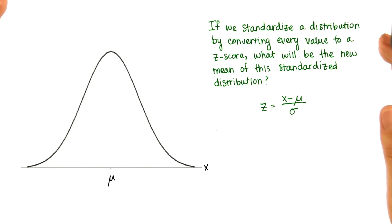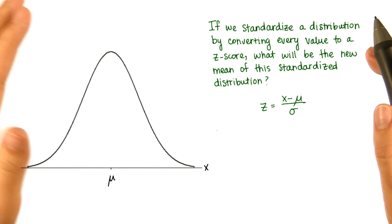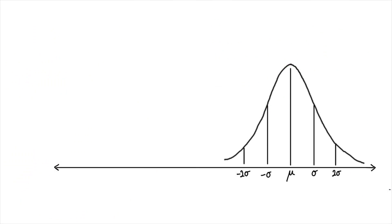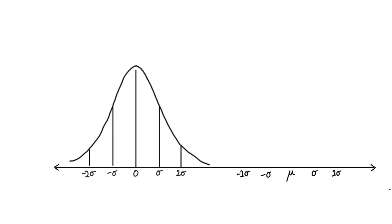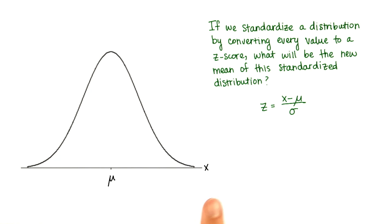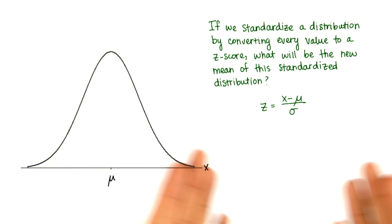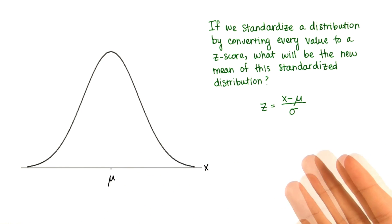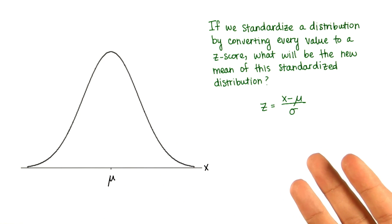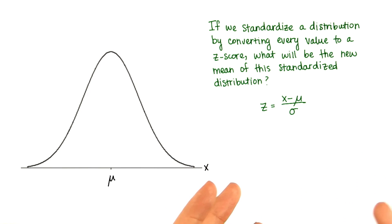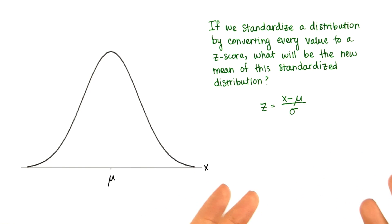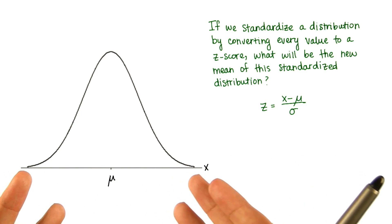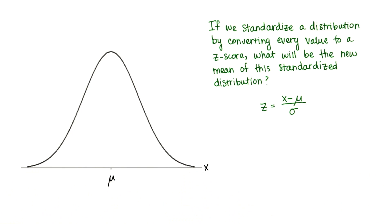So remember, we're taking this distribution and shifting it all the way over to 0, because we're subtracting the mean. Basically, if we have a normal distribution with a mean of 100, if we subtract the mean, we shift this distribution to the left 100, and then the new mean is 0.